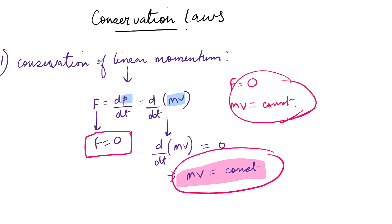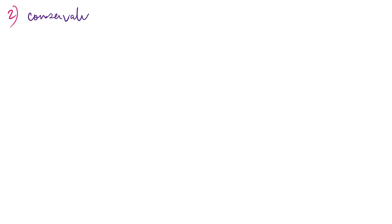This is an important conclusion from the conservation of linear momentum. Now second, we will discuss the conservation of angular momentum. We know that angular momentum J is equal to r cross p, where p is the momentum.